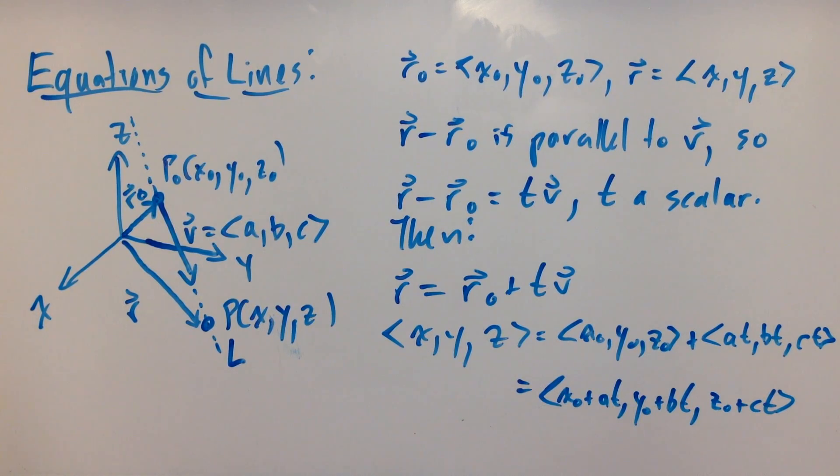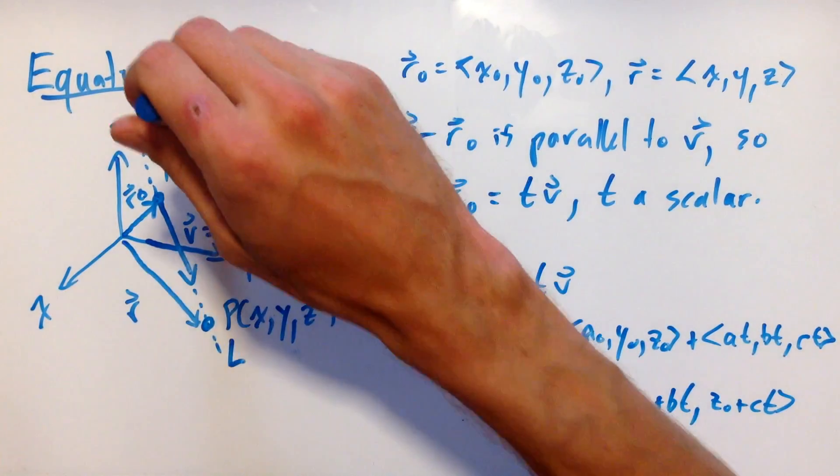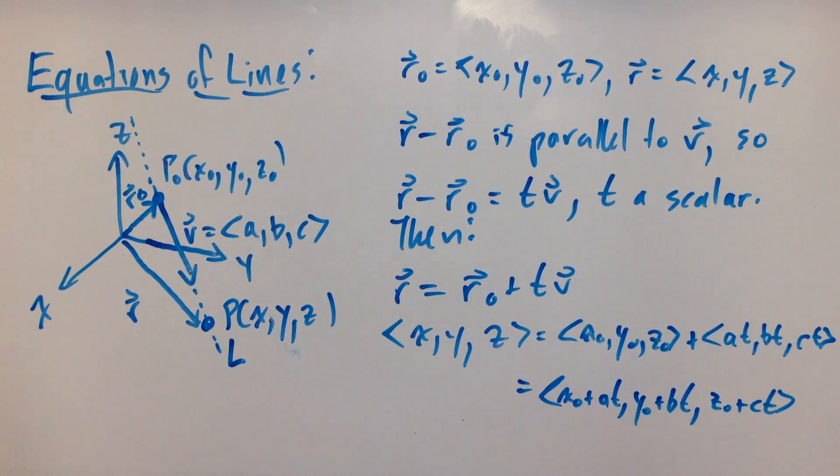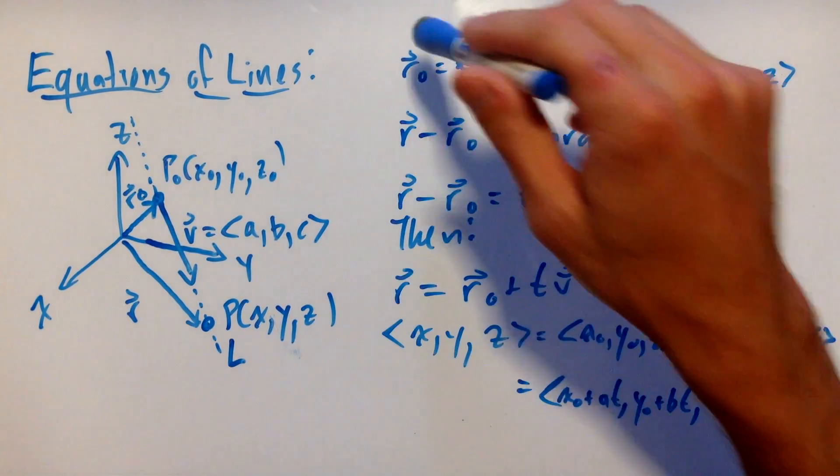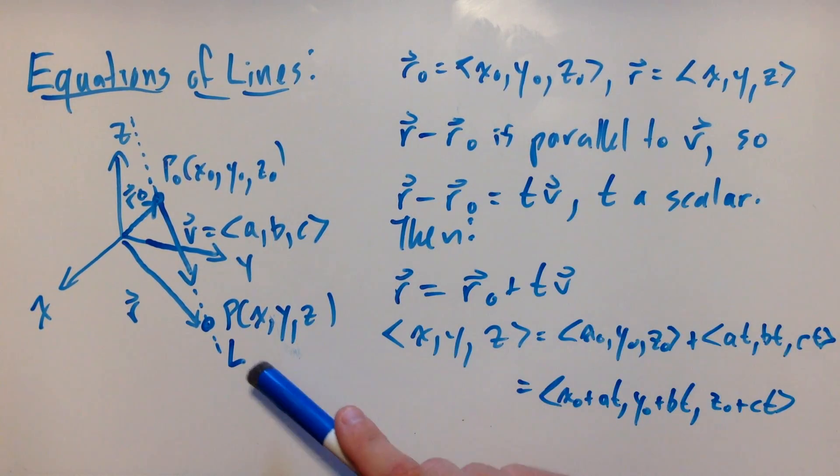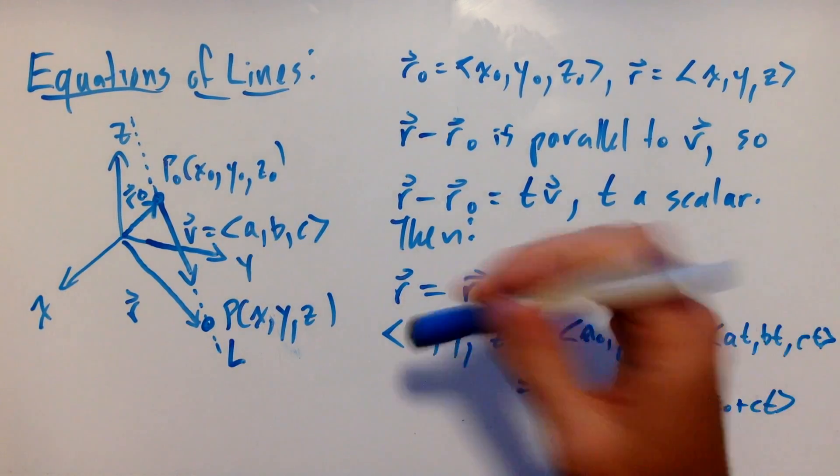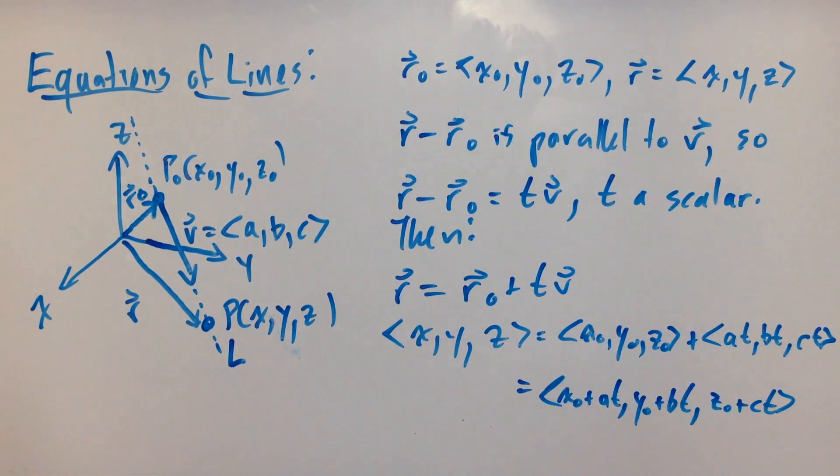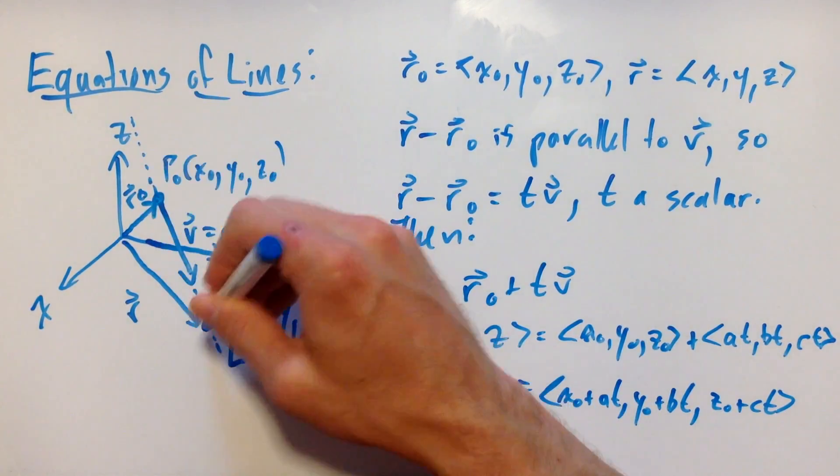First I'm going to represent p0 and p in terms of vectors r0 and r, because technically we can only do our vector operations if we are representing these points as position vectors. So r0 is the vector with components (x0, y0, z0), and r is the vector with components (x, y, z). Those are the coordinates of p0 and p respectively.